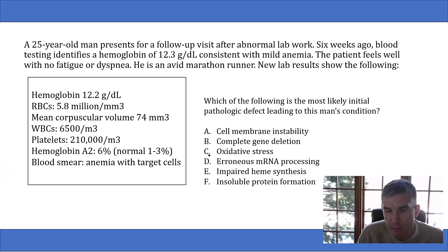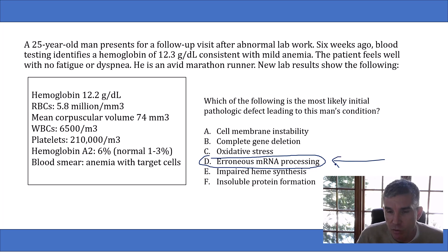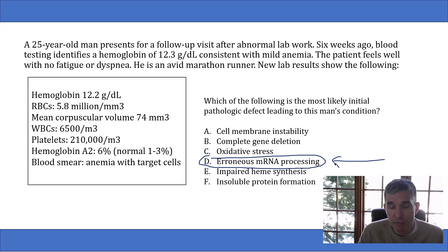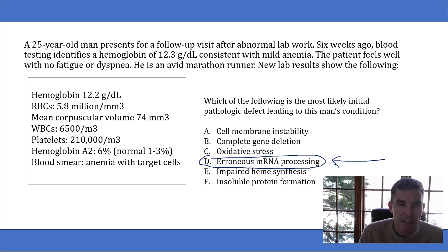Now, although erroneous mRNA processing is present in many patients with beta thalassemia, this is really a minor factoid — not very clinically relevant, and a super detailed piece of information that a lot of medical students will not know. And that's fine. At most, you might see one question on your entire Step 1 exam about mRNA processing and thalassemia. But you could see five or six questions on thalassemia and anemias in general. The far more important takeaway is to recognize beta thalassemia and understand its pathology.